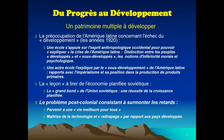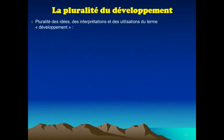Le soubassement théorique de cette vision est la théorie de Rostow. Rostow considère que le développement est linéaire — c'est un processus linéaire, il faut passer par des étapes. On passe par l'étape de la société traditionnelle pour arriver à la dernière étape considérée comme la société de consommation de masse. Pour accélérer le processus, on peut intervenir : l'État peut intervenir pour combler le retard afin de permettre d'arriver à l'étape de consommation de masse qui était la situation des pays colonisateurs. Cependant, il existe une pluralité d'interprétations des concepts de développement, qui n'est pas interprété de la même façon dans la science.